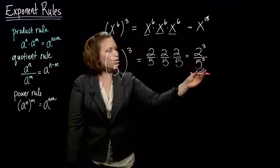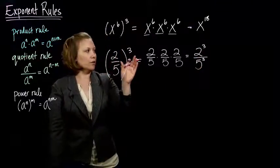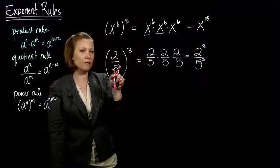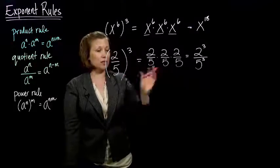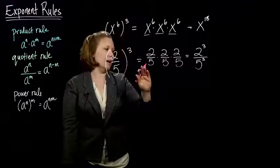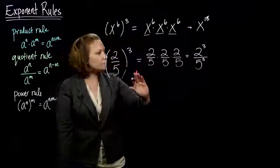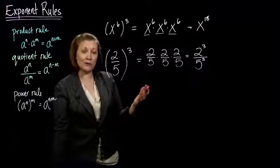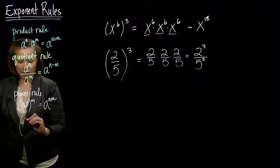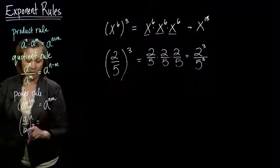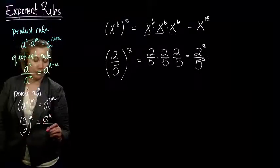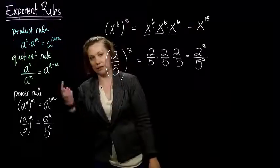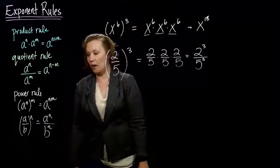I want you to look at how this result is related to what we started with. We took the 2 and ended up with 2 raised to the third power, and we also ended up with the 5 raised to the third power — because that's how we multiply fractions. We multiply the numerator by itself three times and the denominator by itself three times. So we get 2 to the third over 5 to the third. This is what your book calls the power rule for fractions: a fraction raised to a power equals the numerator raised to that power over the denominator raised to that same power.